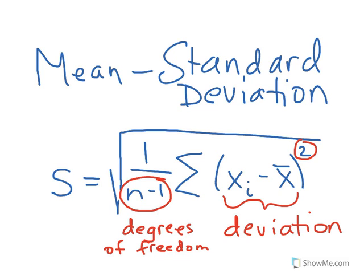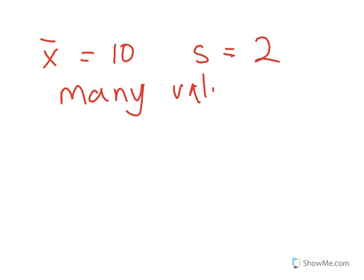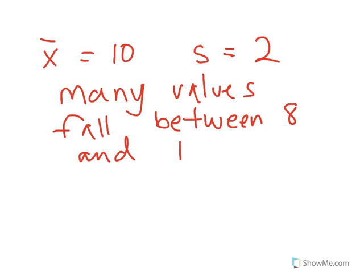So this is the standard deviation, but what does that mean? Well, remember that on the average, what we're trying to do, if I say that, for example, x bar is 10 and s is 2, I'm trying to get an idea for a given data set, how far are most of the values from the average? So if my s is 2, then I would say that many values in the list fall between 8 and 12. Probably more than half are going to fall between 8 and 12. And that's useful to know.